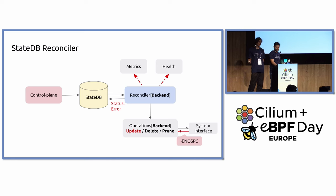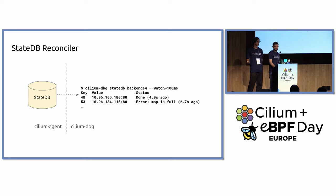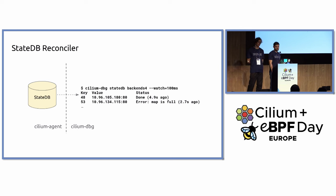The agent health would be reported as degraded — the reconciler cannot reconcile all the objects — and the failing status would be written back into StateDB where it can be inspected. We can through cilium-dbg look at any of these tables and dump them, and we can watch them over time. This is very similar to what you get with Kubernetes — very similar concepts and APIs, just internally in the agent — with the same flexibility for adding new components and the same guarantees that you won't interfere with other components.